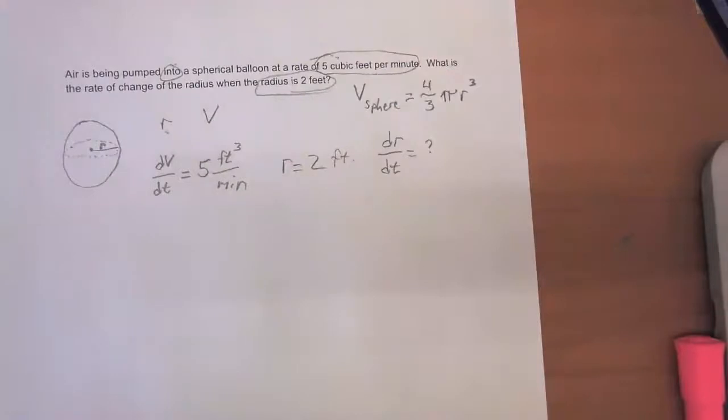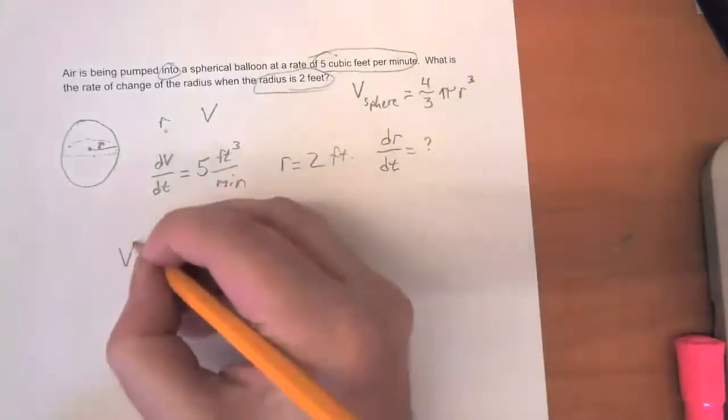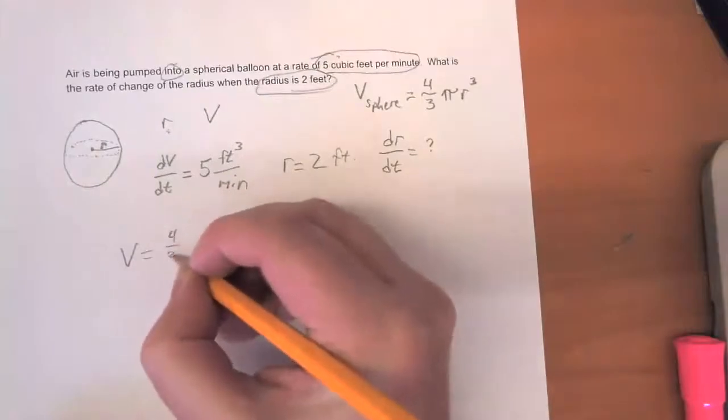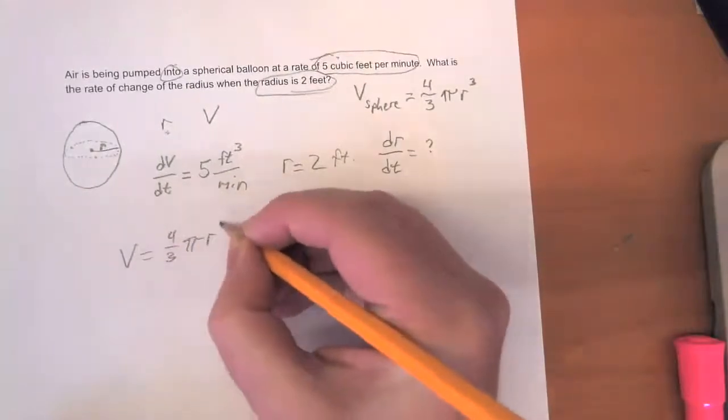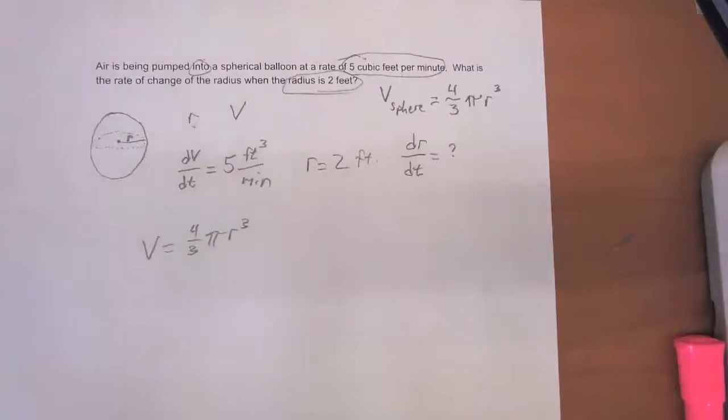Step five is to implicitly differentiate this formula with respect to time. V equals four thirds pi r cubed. So differentiate that with respect to time. Pause the video.